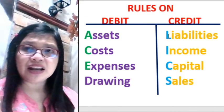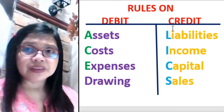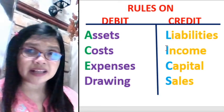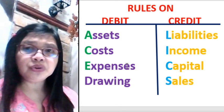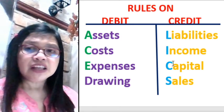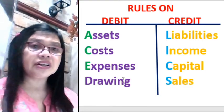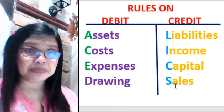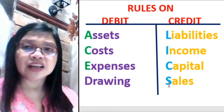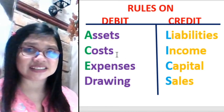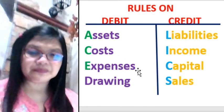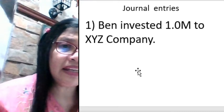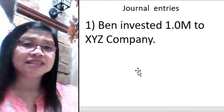If you want to decrease your liabilities, you credit it. Sales has a normal credit balance; if you want to decrease sales, you incur costs and expenses. Let's try these examples. Ben invested 1 million to XYZ company. 1 million is a capital account. The normal balance of equity or capital is credit.